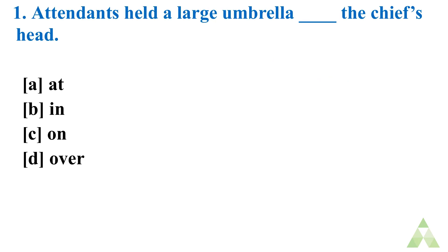Presenting the first question. Attendants held a large umbrella dash the chief's head. Option A. At. Option B. In. Option C. On. Option D. Over. So which is the right answer? Quickly write down in the comment box.